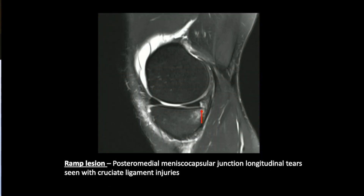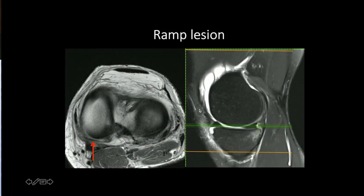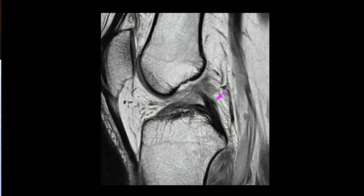There are two more longitudinal tear types common with cruciate ligament injuries. The ramp lesion is more commonly a meniscocapsular junction tear or a peripheral posterior horn medial meniscus tear. When you see a discrete fluid signal between the capsule and the meniscus, that is a ramp lesion. On actual images, the black line is the capsule, the black line is the meniscus, and between them you see a hyperintense signal — that is the ramp lesion or meniscocapsular junction tear.